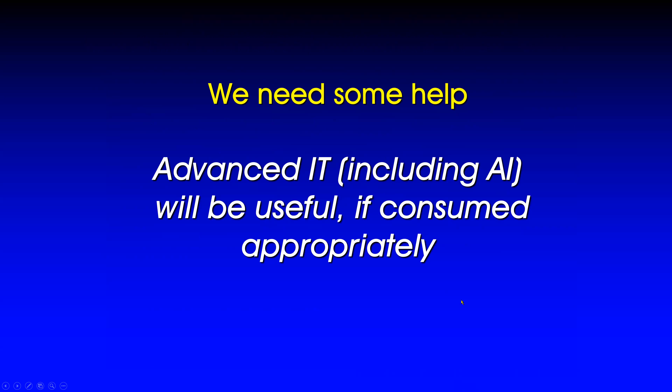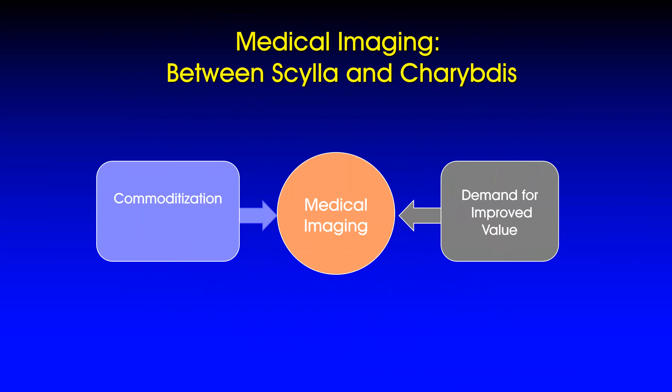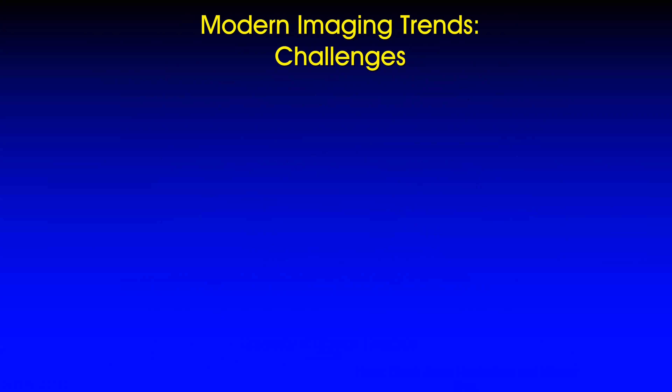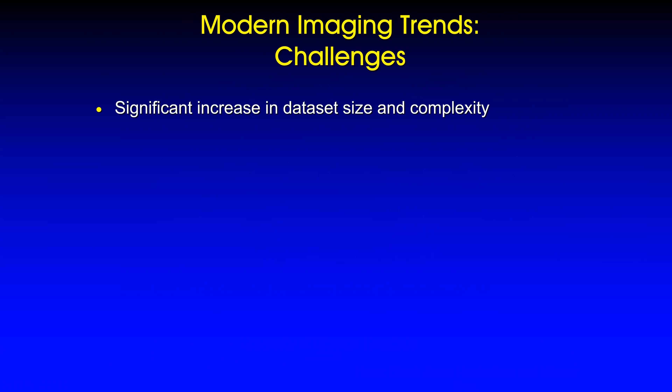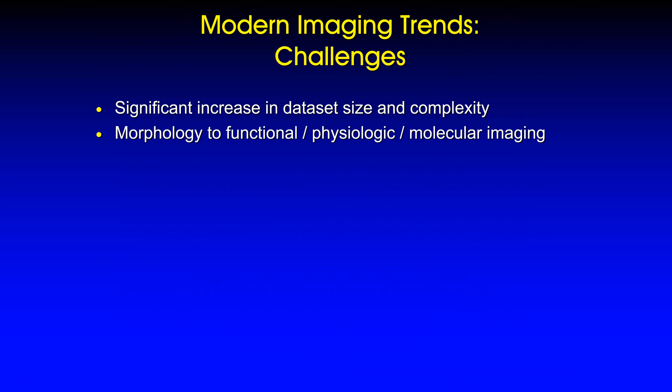The Gartner hype curve is an example: we ride this hype curve because we tend to buy early into hype but it takes us much longer to appropriately consume. Whether you are advocates for AI or still skeptical — which is probably a good perspective — we need some help. We're going to need help from advanced IT including AI, because right now many of us are barely hanging on, stuck between the rock and the hard place: expected to provide added value while reducing costs.